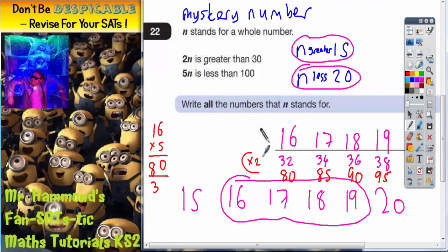2 lots of each number is all bigger than 30, and 5 lots of each number is all less than 100. So your answers are there on the answer space: 16, 17, 18, and 19.